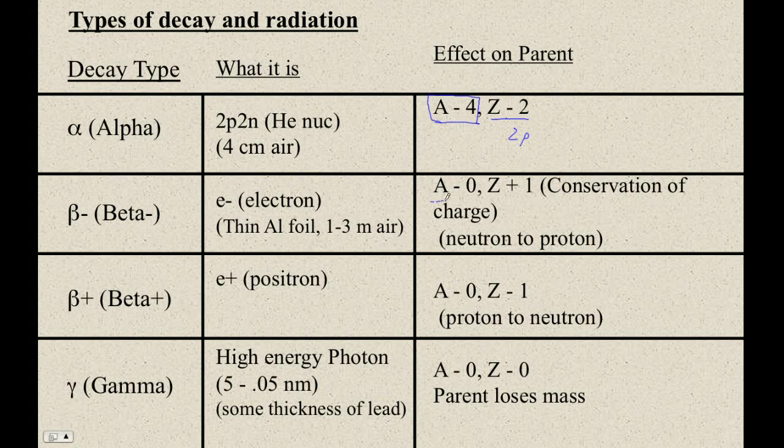Beta minus decay, the mass number doesn't change. Remember, an electron is incredibly small. So, this electron is not made, it's not like a nucleon turns into the electron. It's just that there's enough energy released to create an electron from pure energy. So, there's no change in mass number, but if you create a negative charge, you have to create a positive charge. So, it's as if a neutron crosses the aisle and becomes a proton. That's the notion. But that's not really what's happening.